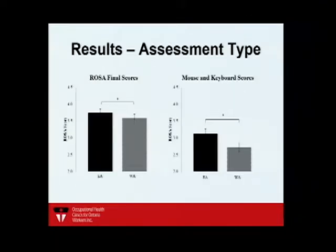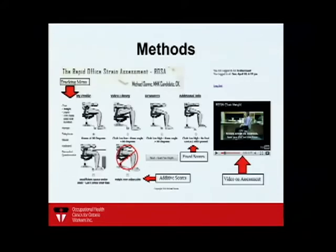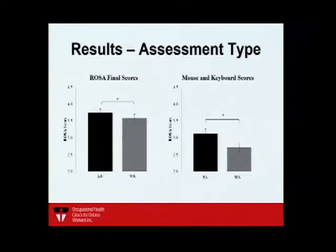We found that expert scores were a little bit higher than worker scores. We traced this back to our original use of mannequins to demonstrate ideal postures — people got thrown off by that. We've since changed to real photos of workers, which improved things. For the chair, monitor, and telephone, ROSA scores were accurate regardless of who was doing the assessment.